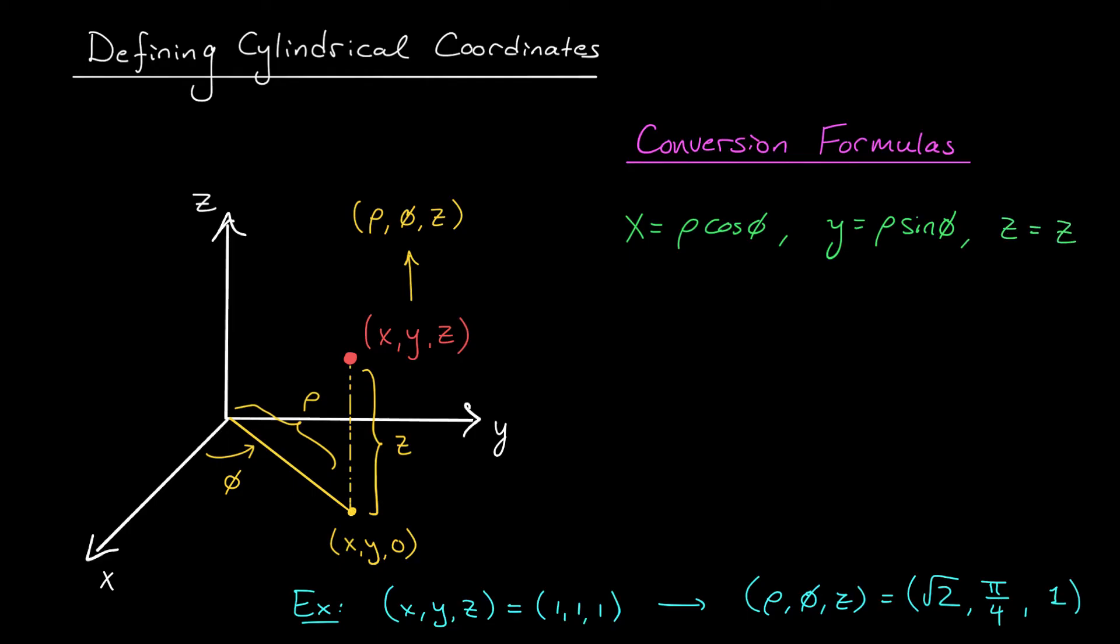Going the other way, we can write rho = sqrt(x² + y²), tan phi = y/x, these are our formulas from polar coordinates, and of course z = z. It remains the same.